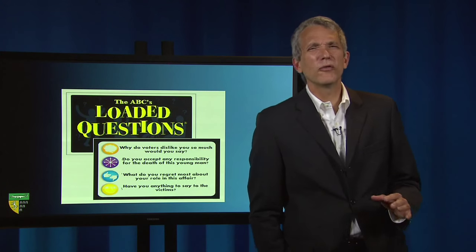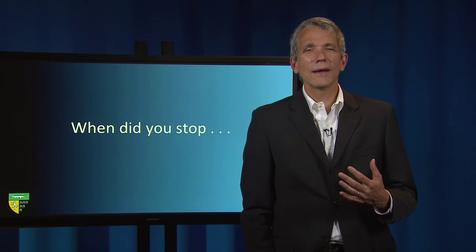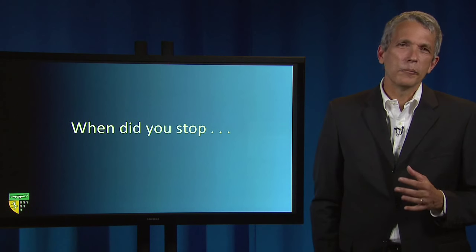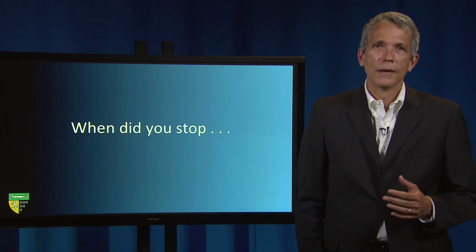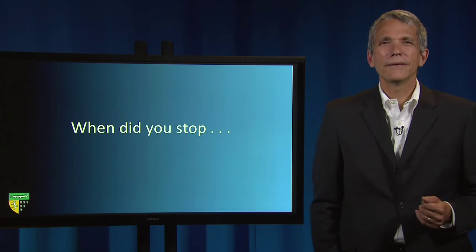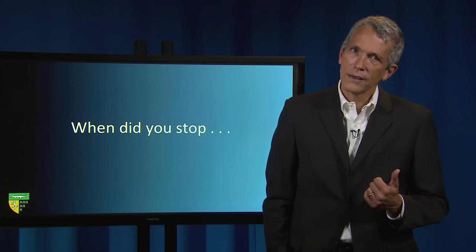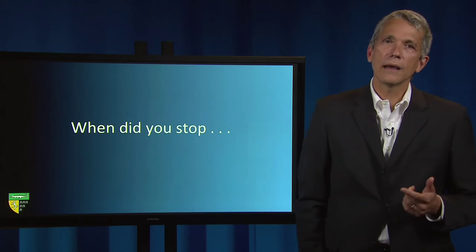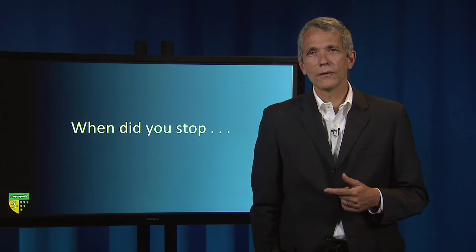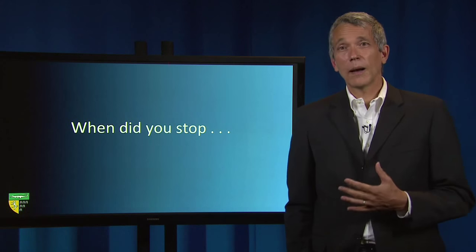Probably the most famous example used to teach this concept is the hypothetical cross-examination question: When did you stop beating your spouse? The assumes-a-fact objection is appropriate if there isn't an adequate evidentiary foundation that the witness: A, has a spouse; B, at some point in the past had been beating his or her spouse; and C, had at some point more recently stopped beating them.